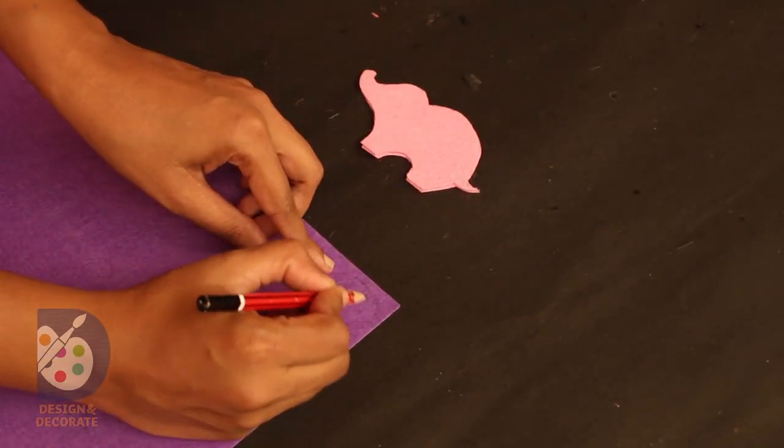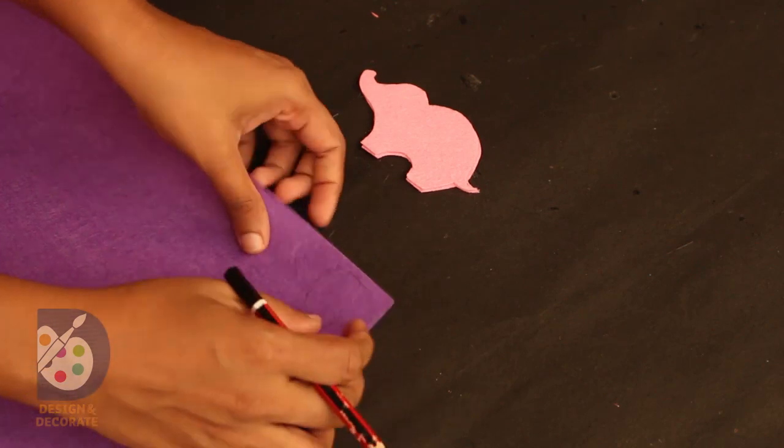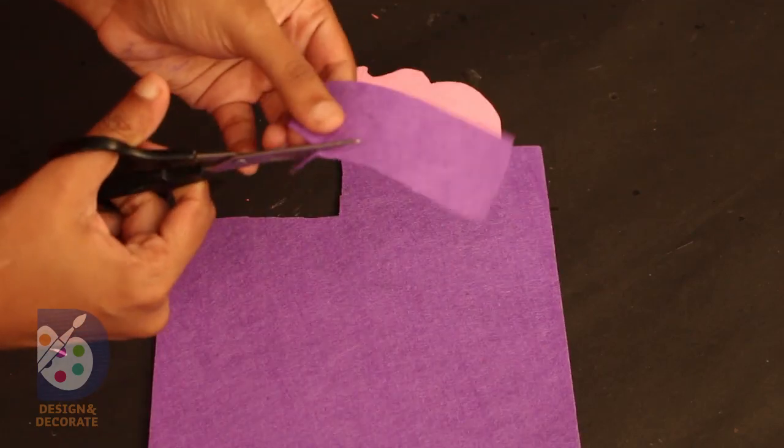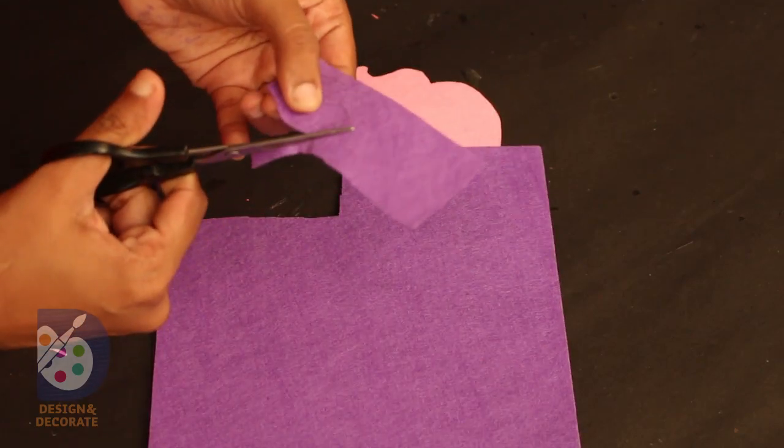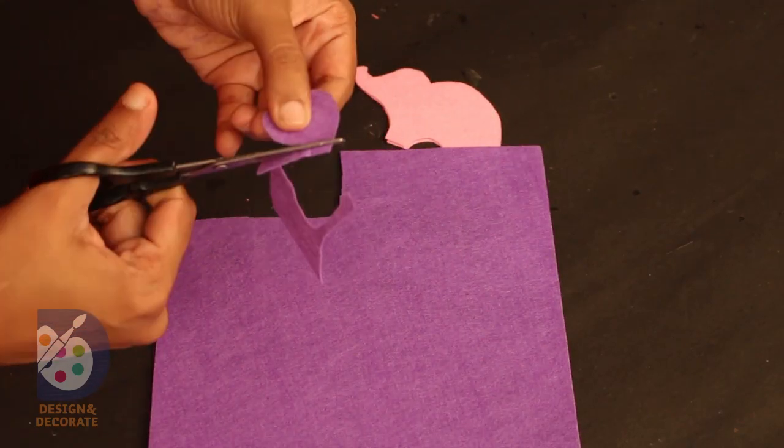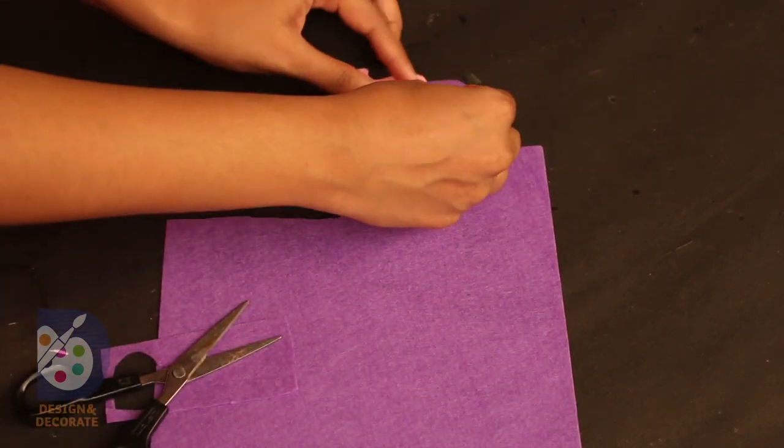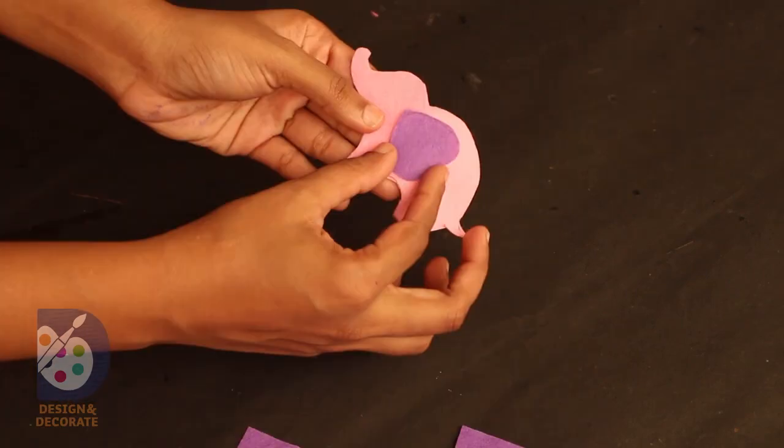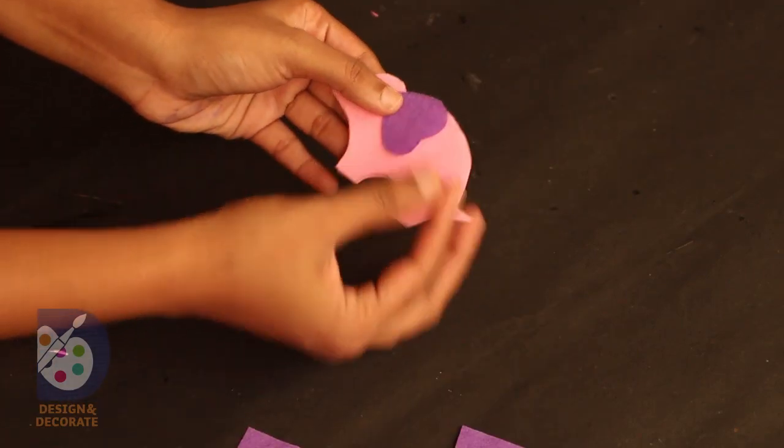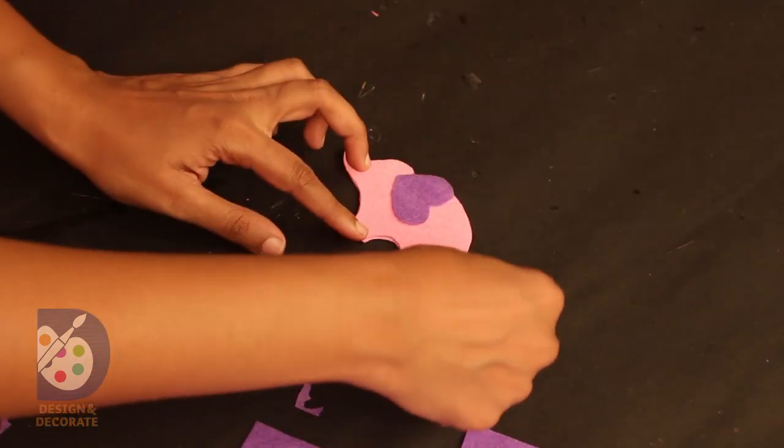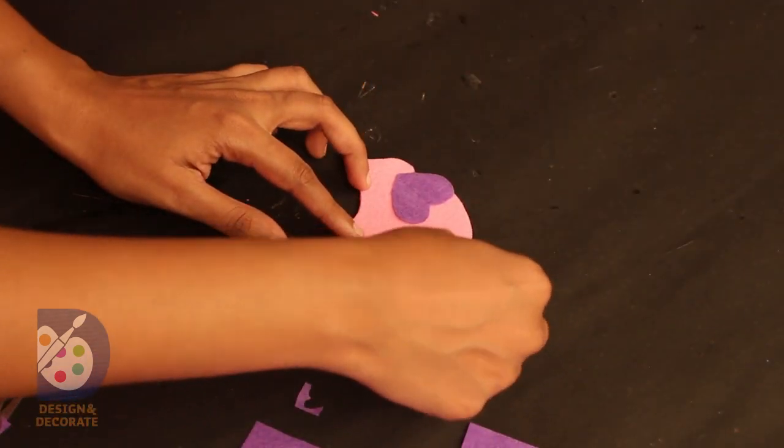Using another color, I am going to cut out the ear of the elephant in a heart shape. Make another small heart shape which we can fix on the tail.